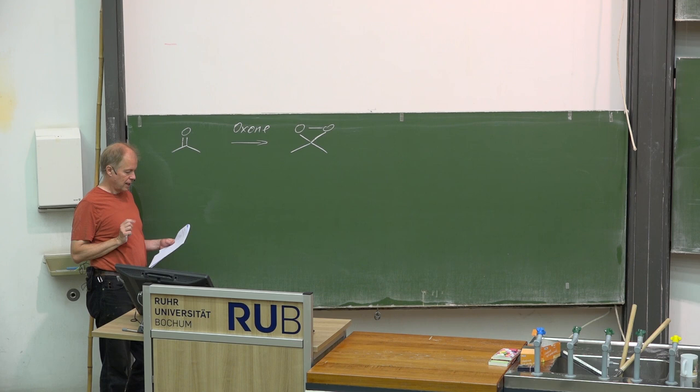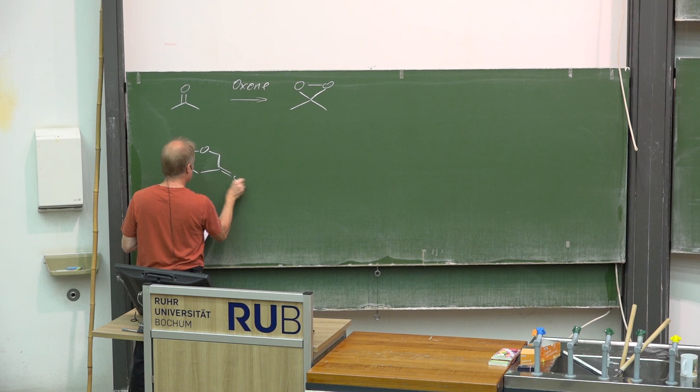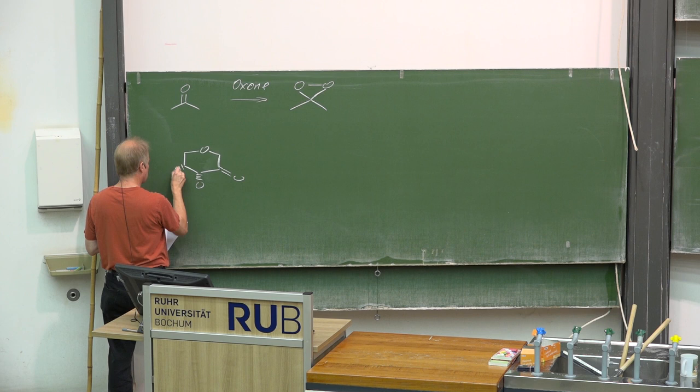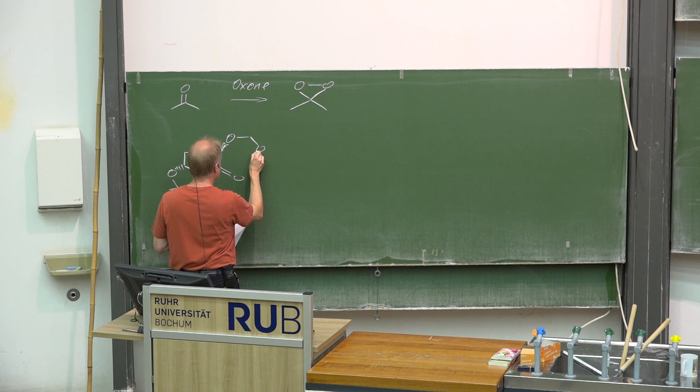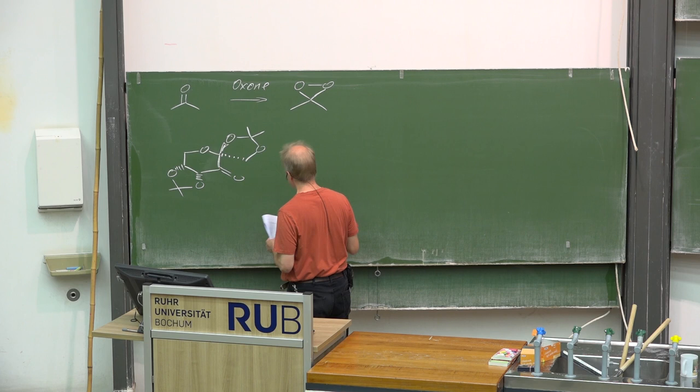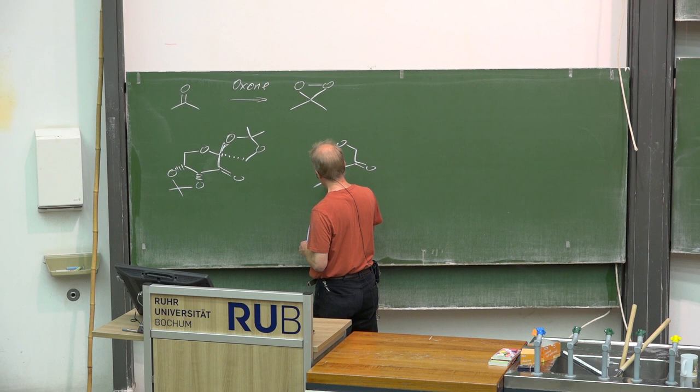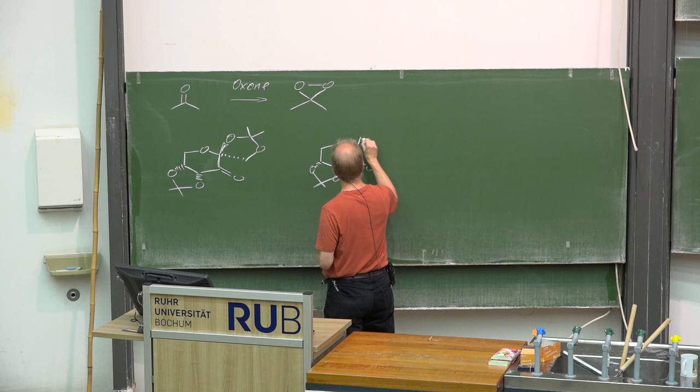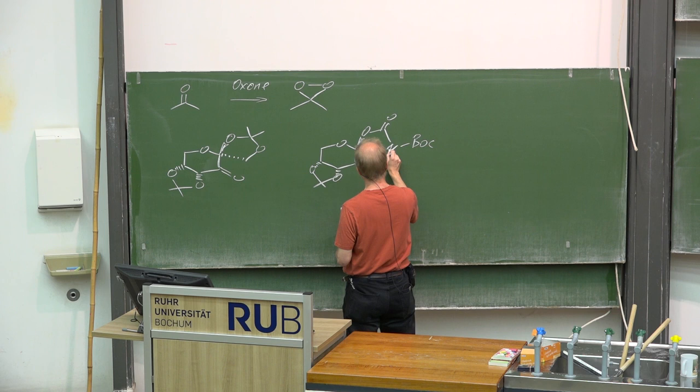Now to the idea of Yian Shi: he thought, maybe I can use chiral ketones for enantioselectively delivering the oxygen. And indeed, he developed these two examples of chiral ketones based on carbohydrates.